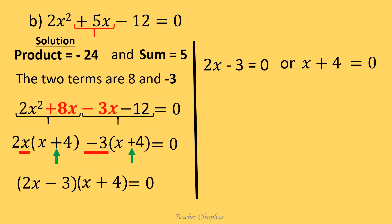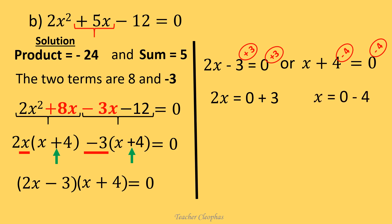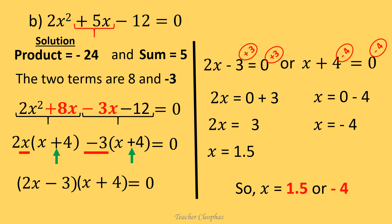Since whenever a product is zero it means either of the numbers or both is equal to zero, we can write 2x minus 3 equals to zero or x plus 4 equals to zero. Adding 3 on both sides gives 2x equals to 3. Subtracting 4 on the other equation gives x equals to negative 4. Dividing both sides by 2, we have x equals to 1.5. So x is either 1.5 or negative 4.